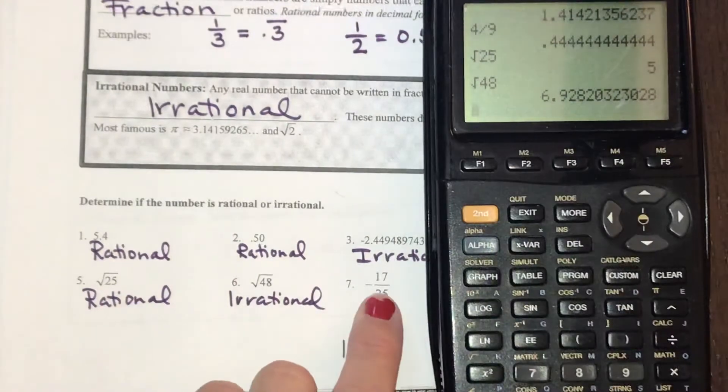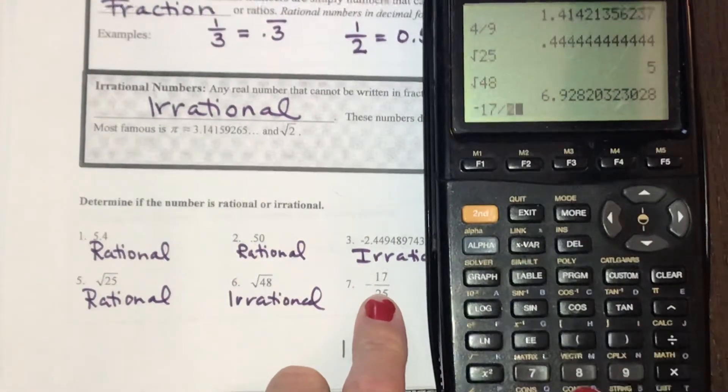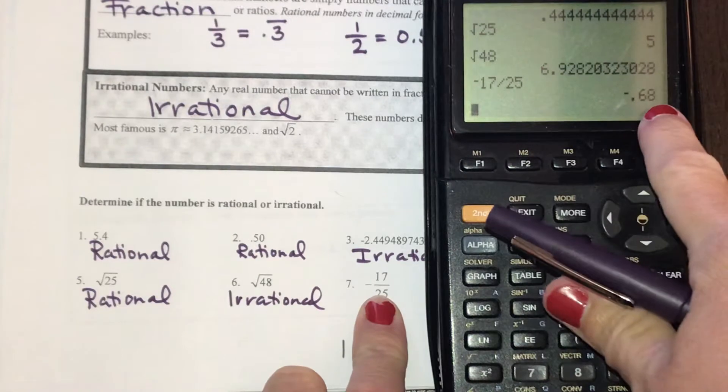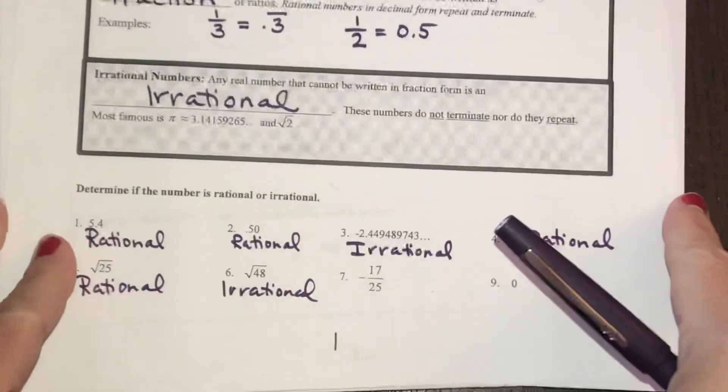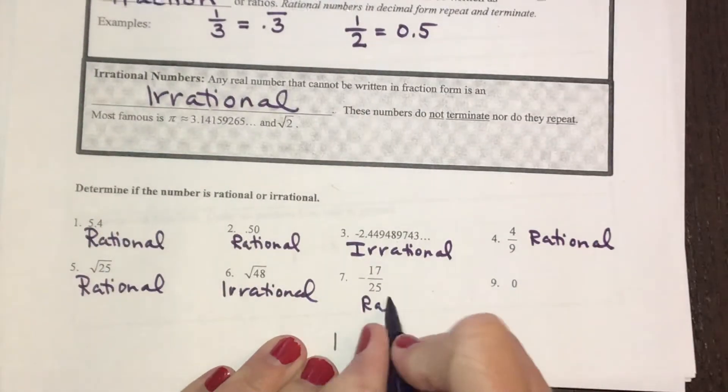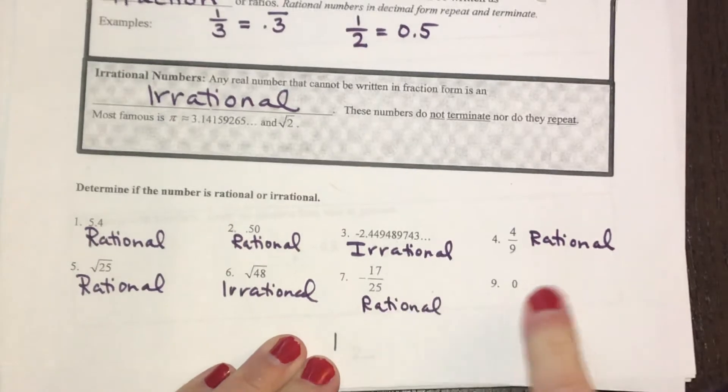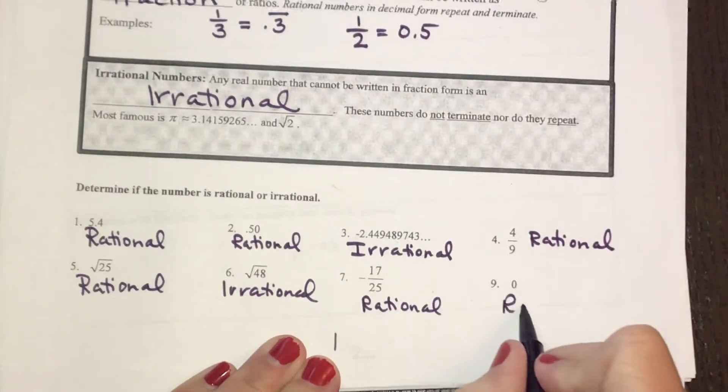The next one, negative 17 divided by 25. This decimal stops, so that would be rational. And 0 has no decimal, which is rational.